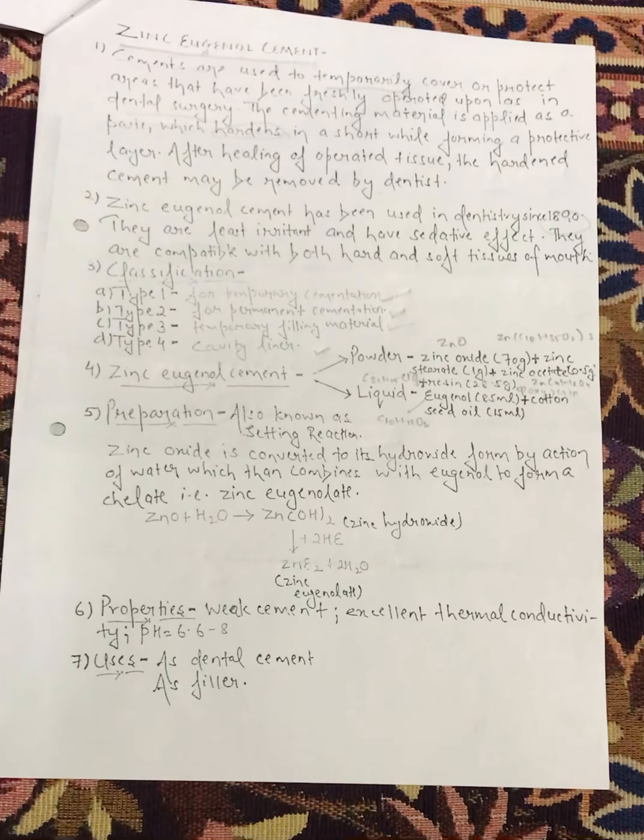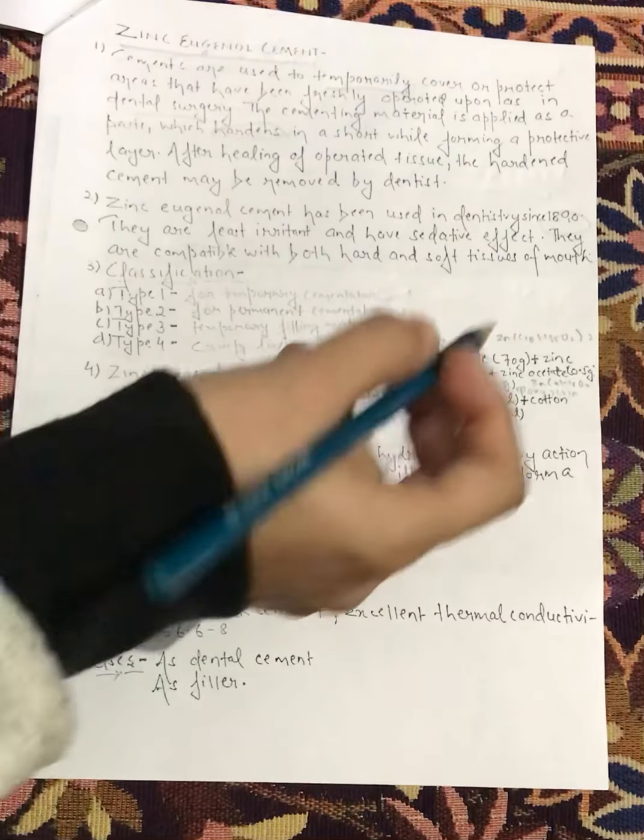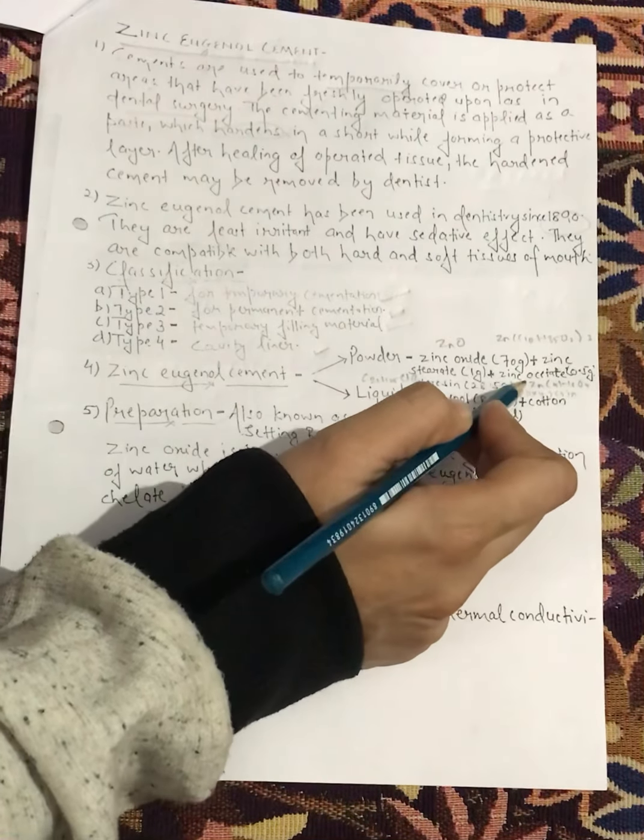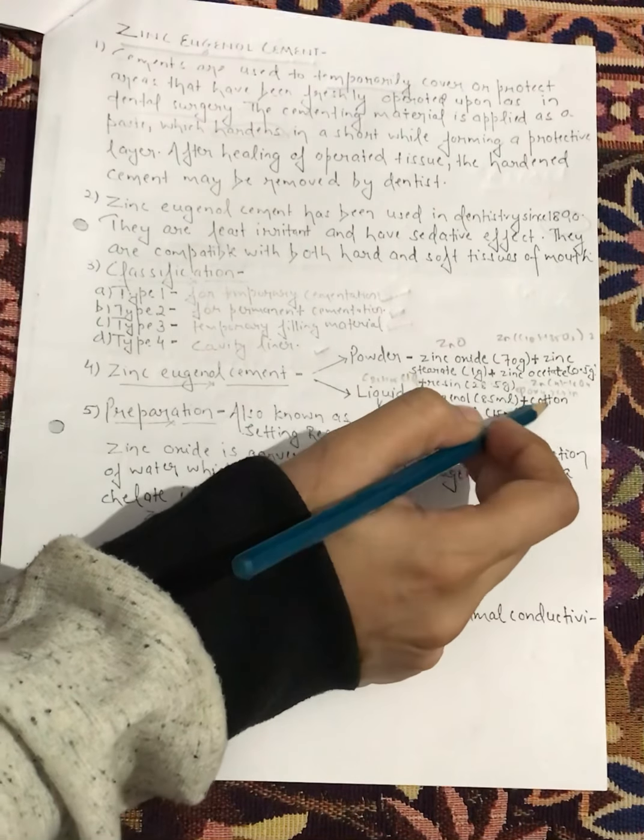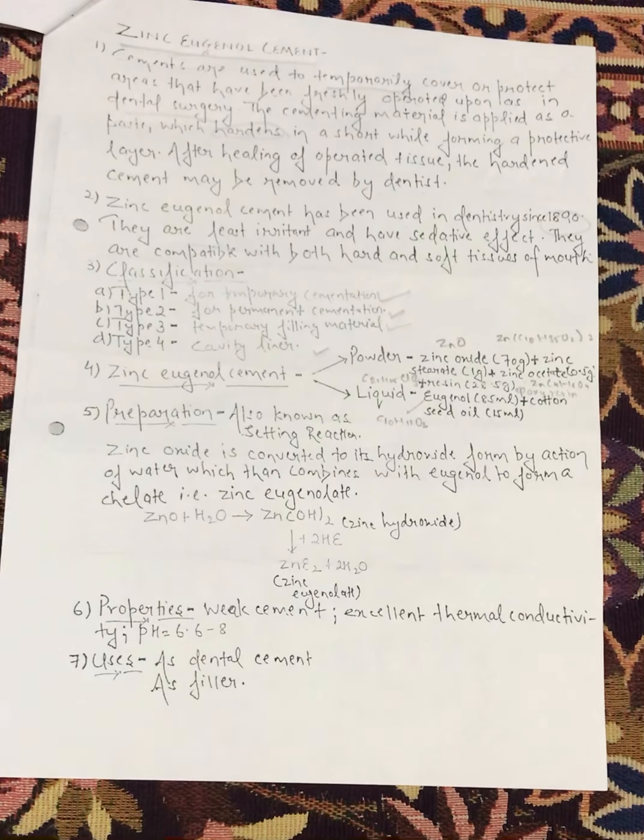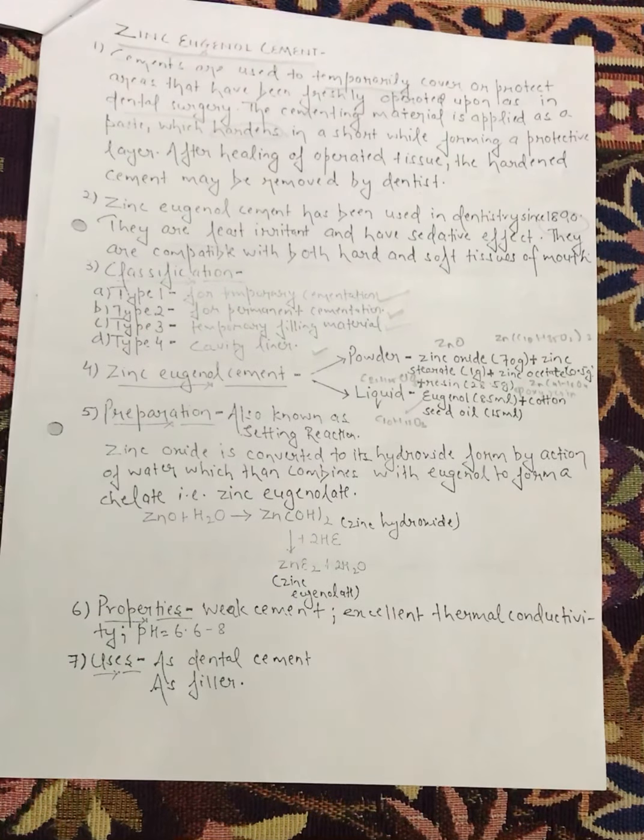Now, we have the zinc eugenol cement, which is the dosage form. It will be available as powder or liquid. If it is powder, what is the composition? Zinc oxide, zinc stearate, zinc acetate and resin. If it is liquid, we have eugenol cotton seed oil. These are the two formulations of zinc eugenol cement.